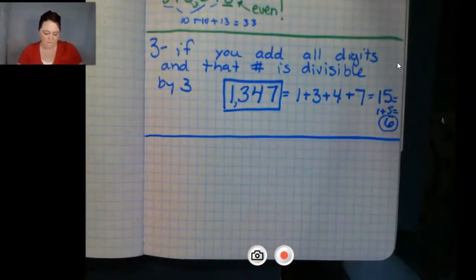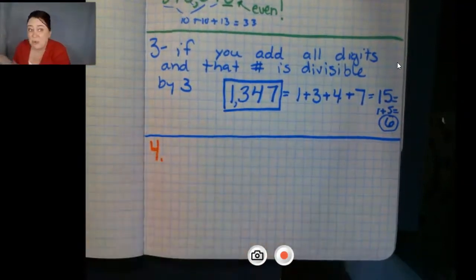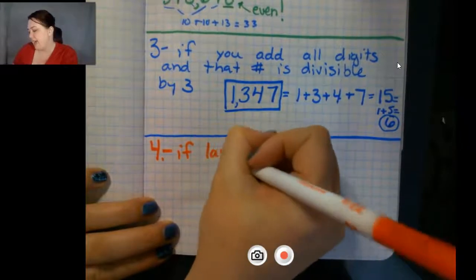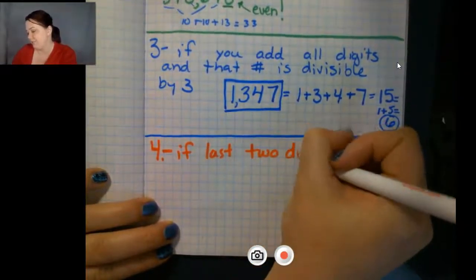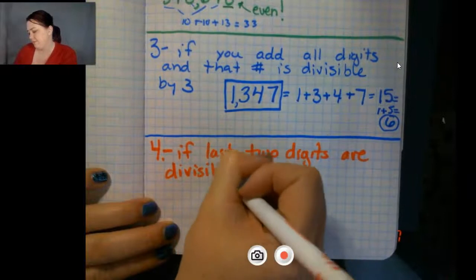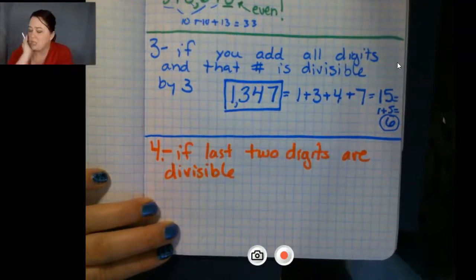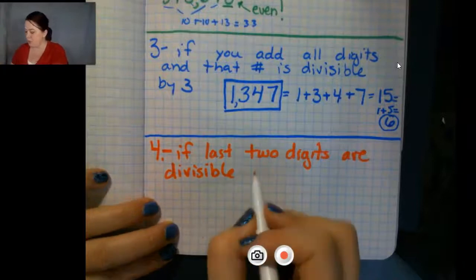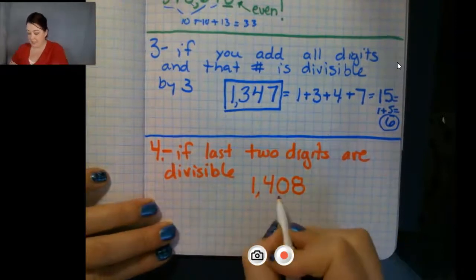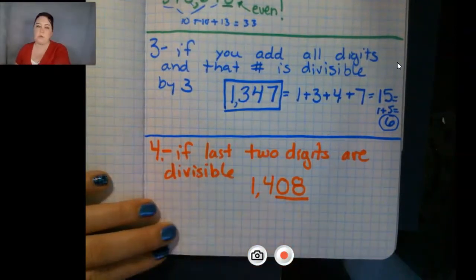All right. Fours. Four is next. Four is not as great as three. I just have to say it. Four is just not as great as three. Four is if last two digits are divisible. So if the last two digits of the number are divisible by four, then the whole number is divisible by four. So, for example, 1,408. 08, this is the last two digits. Eight is divisible by four. So this whole number would be divisible by four.